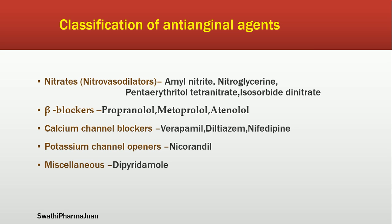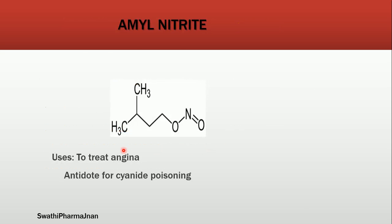Now we will see the structures and mechanism of action one by one. This is the structure of amyl nitrite. Amyl indicates isopentyl group — a branched pentane chain: CH2, CH2, CH, CH3, CH3 — a 5-carbon branched chain called isopentyl, also called amyl group. The nitrite group NO2 is attached to one of the carbons of the isopentyl group. That is the structure of amyl nitrite.